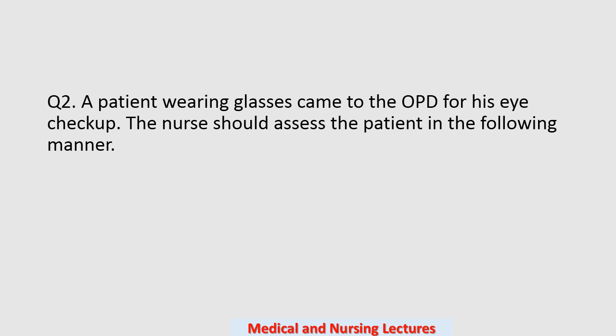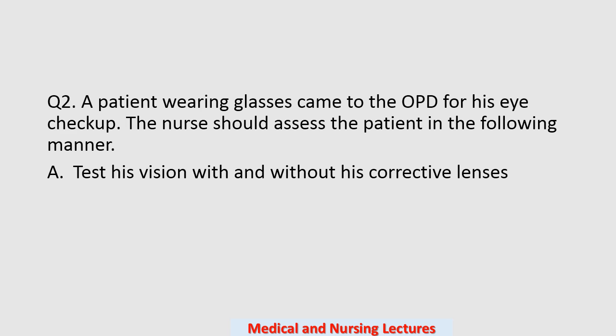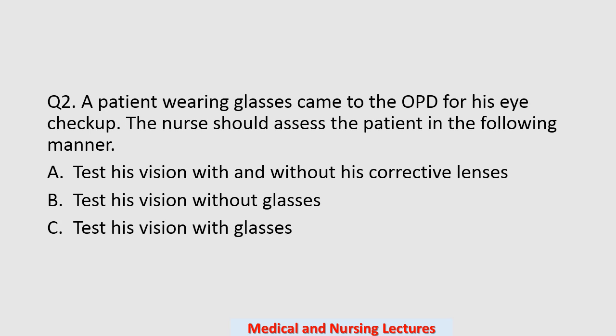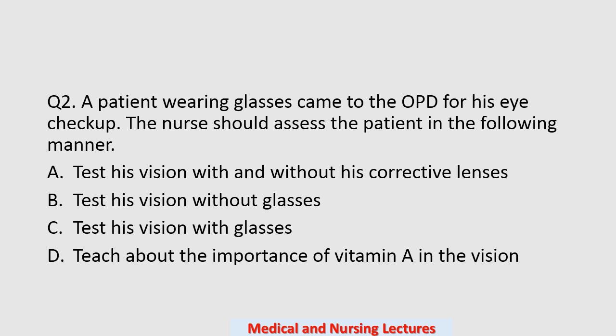Question number two: a patient wearing glasses came to the OPD for his eye checkup. The nurse should assist the patient in the following manner. Option A: test his vision with and without his corrective lenses. Option B: test his vision without glasses. Option C: test his vision with glasses. Option D: teach about the importance of vitamin A in vision. The correct option is A — the nurse should test his vision with and without his corrective lenses.